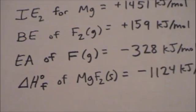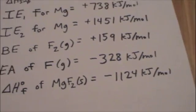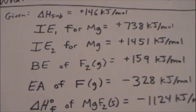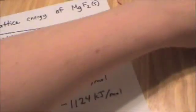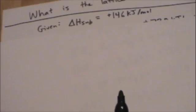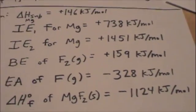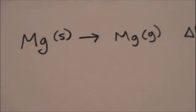The delta H of formation of magnesium fluoride solid is negative 1124 kJ per mole. Use all this information to calculate the lattice energy of MgF₂. Let's make sense of all this. Delta H of sublimation for magnesium is 146 kJ per mole, so we can write: magnesium solid going to magnesium gas has a delta H of sublimation equal to 146 kJ per mole. The ionization energy for magnesium is the energy required to remove an electron from magnesium in its gaseous state.